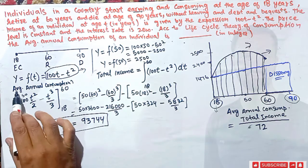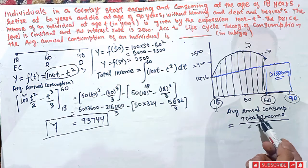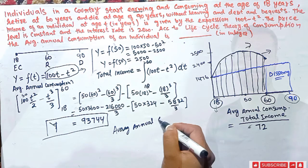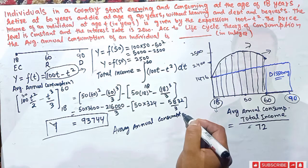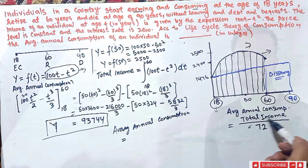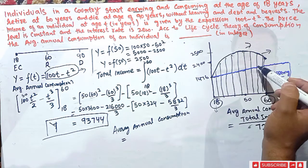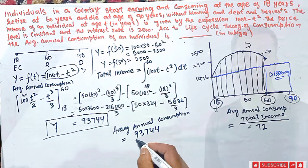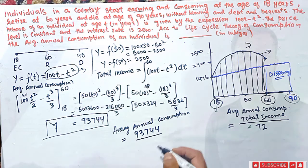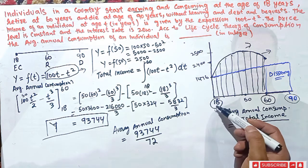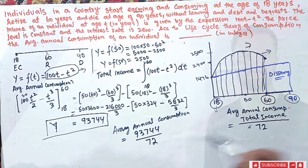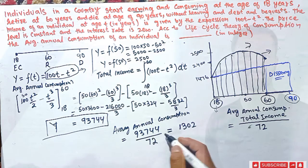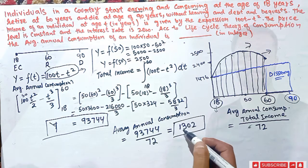Now we find the average annual consumption. Average annual consumption equals total income — which is 93,744, the area under the income curve — divided by 72, the number of years from when he starts working to when he dies. Solving this gives us an average annual consumption of 1302.